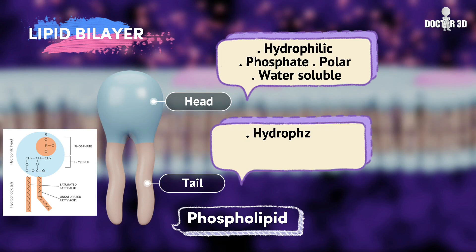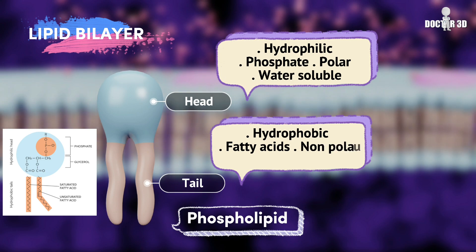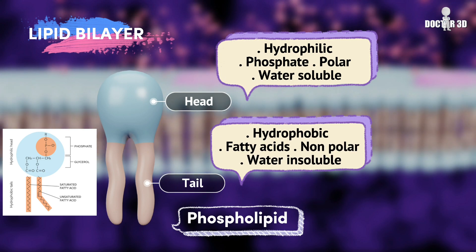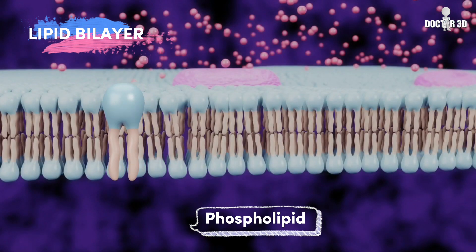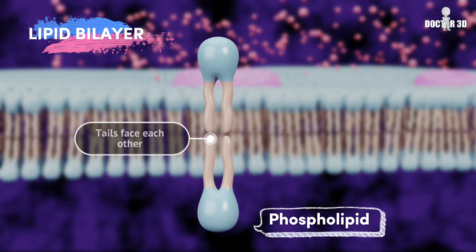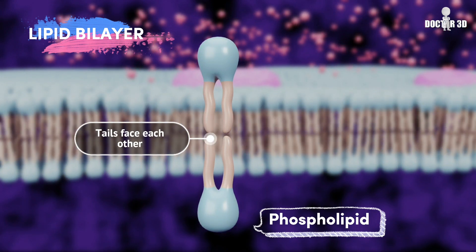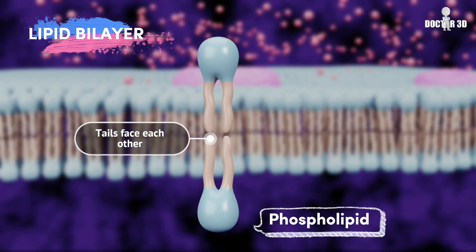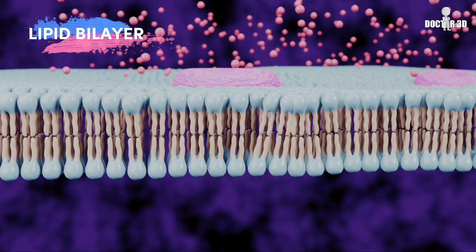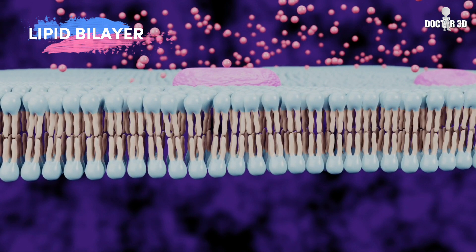The tails are hydrophobic because they contain fatty acids; they are non-polar and water-insoluble. The tails of phospholipid molecules of the two sheets face each other, thus forming the lipid bilayer.